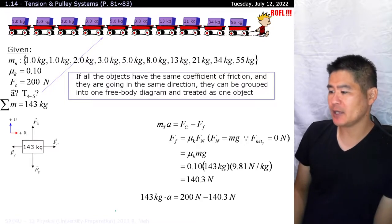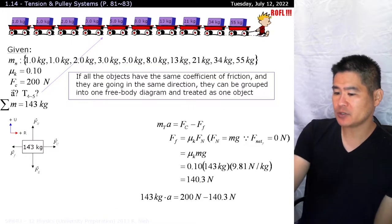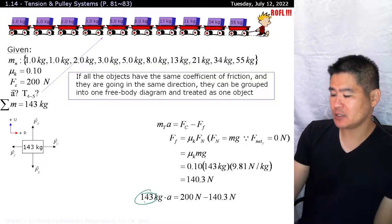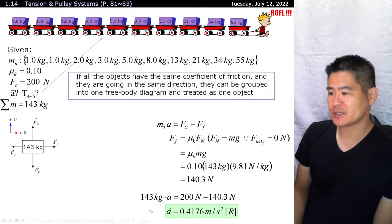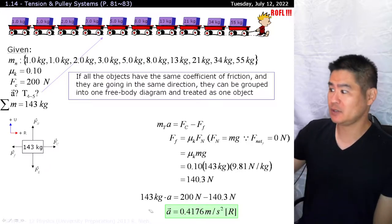Therefore, ma is equal to 200 newtons subtract 143 newtons. Mind you, this is the total mass. So don't use the mass of any individual object. So when you isolate for a, that's acceleration in the entire system. So instead of creating 10 equations with 10 unknowns, we have one equation with one known. And then we solve.